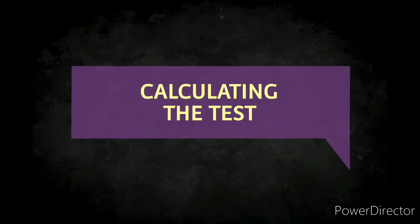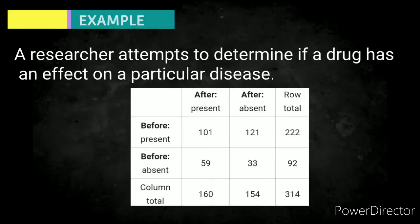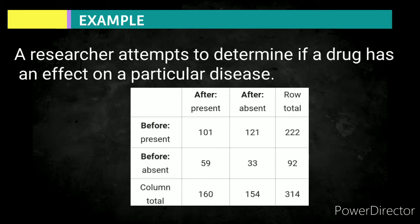Calculating McNemar test. We have here the example: a researcher attempts to determine if a drug has an effect on a particular disease. So, we have here the after-present column. We have 101 for A, 59 for C. While the second column, we have 121 for B and we have 33 for D.